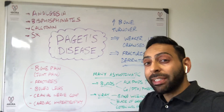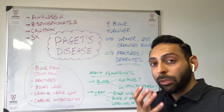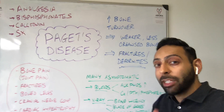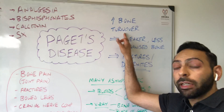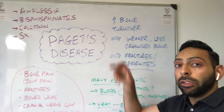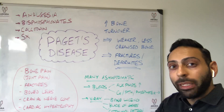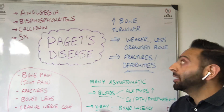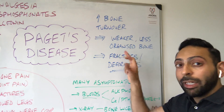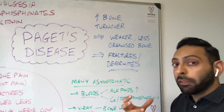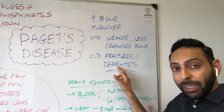A quick video on Paget's disease of the bone in case this comes up in medical questions or scenarios. Paget's disease is basically when you have increased bone turnover due to increased resorption, and therefore you're trying to build bone quickly. Because you're building it quickly, the newer bone is weaker and less organized, which can lead to an increased risk of things like fractures and deformities.